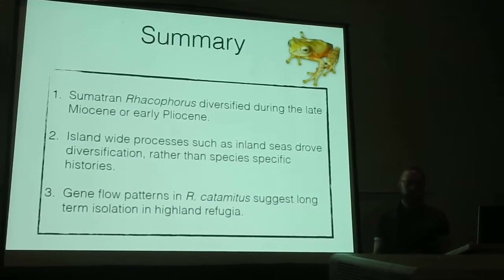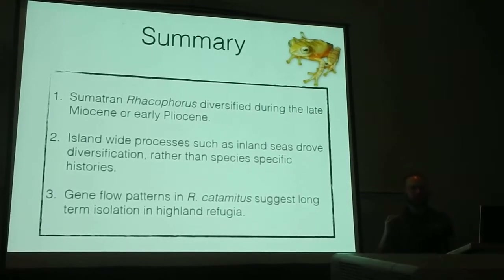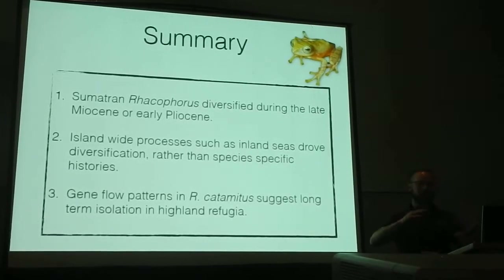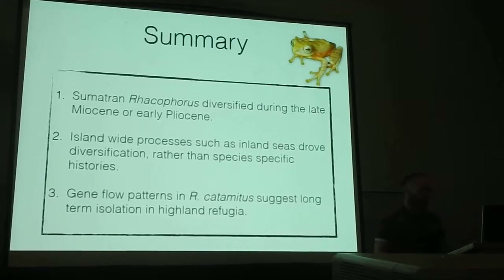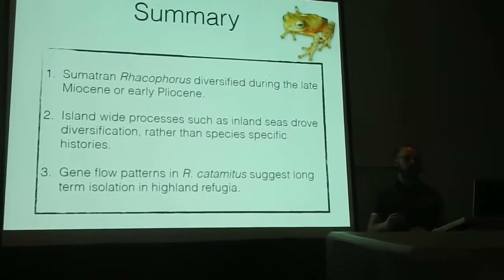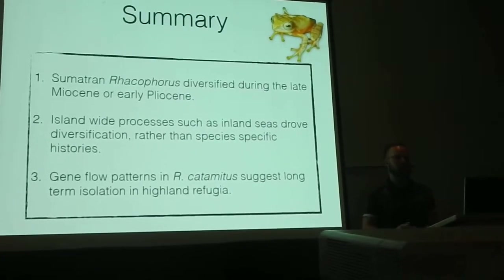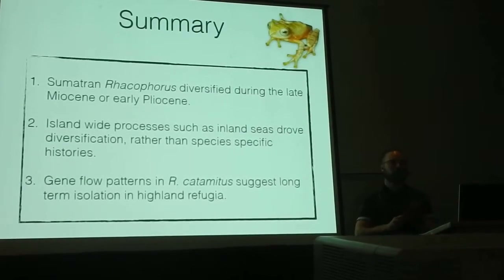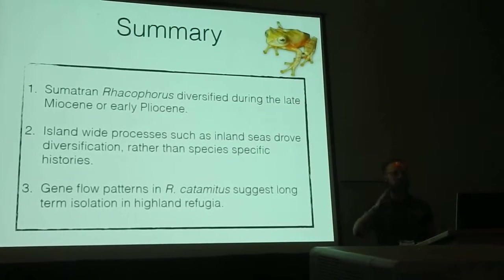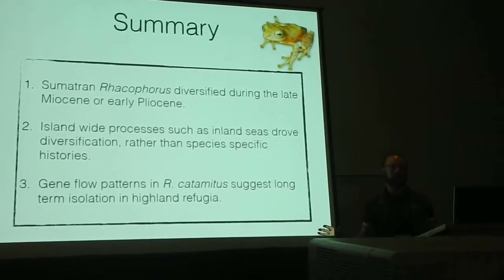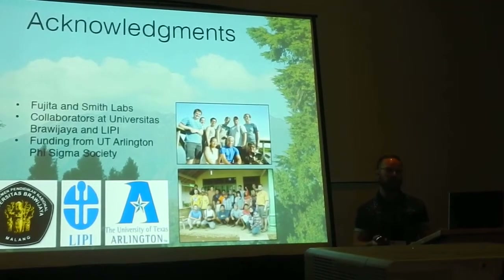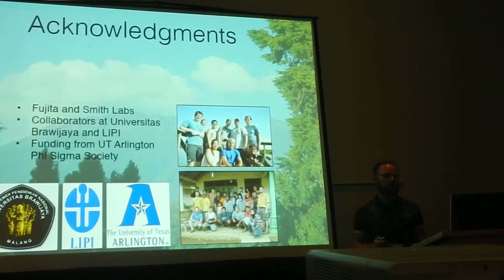To summarize, we found that Racophorus diversified during the late Miocene and early Pliocene, likely after the inland seas but long before the Pleistocene land bridges across the Sunda Shelf. We see island-wide processes driving diversification rather than species-specific histories, with very concurrent population structure across the species comparisons. And when we look at gene flow across the island, we see long-standing isolation among populations — during the Pleistocene, despite the land bridges, we do not see evidence of species being able to disperse across Sumatra. I'd like to acknowledge funding and collaborators at UTA and in Indonesia, and take any questions.